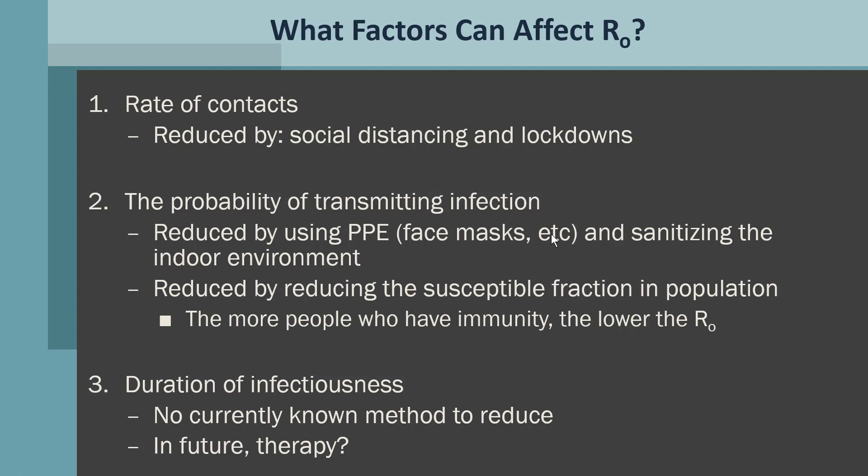R0 is also reduced by reducing the susceptible fraction in the population. We'll talk more about this later, but the more people who have immunity, the lower the R0. The third factor is duration of infectiousness. At present, we have no way of reducing the duration of infectiousness. Perhaps in the future, with therapy, this could be achieved.